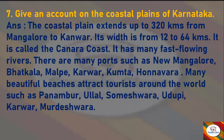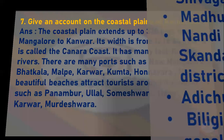Next: Give an account of the coastal plains of Karnataka. Answer: The coastal plain extends up to 320 kilometers from Mangalore to Karwar. Its width is from 12 to 64 kilometers. It is called the Canara Coast. It has many fast-flowing rivers. There are many ports such as New Mangalore, Batkala, Malpe, Karwar, Kumta, Karnatakamadavar. Many beautiful beaches attract tourists from around the world, such as Panambur, Ullal, Someshwara, Udupi, Karwar, and Murdeshwara.